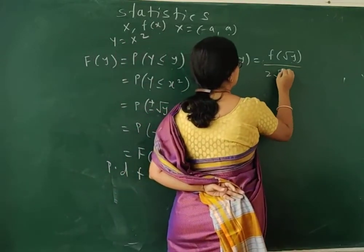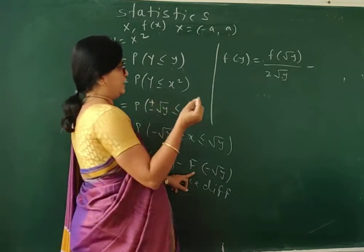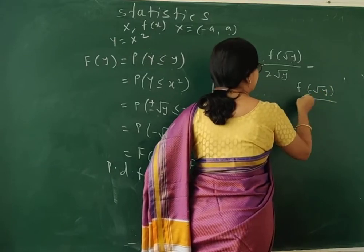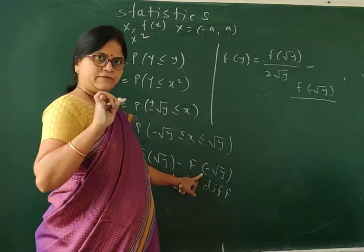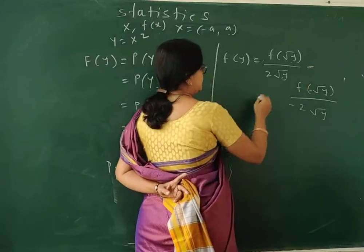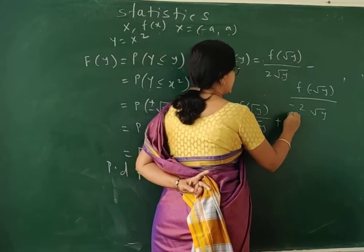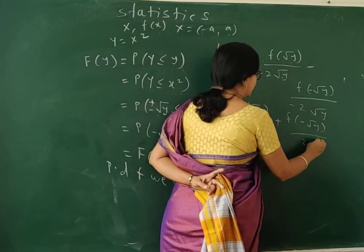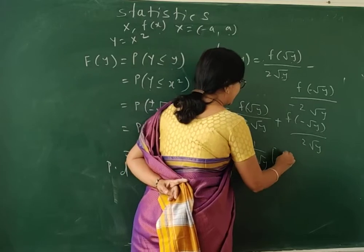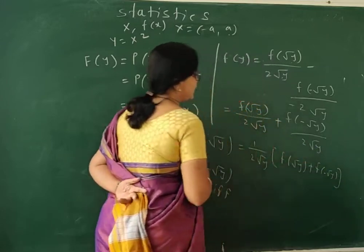So we get f(√y) · (1/2√y) minus the derivative of F(−√y). Since the derivative of −√y is −1/(2√y), the minus signs give a plus. So the final result is: f_Y(y) = [f(√y) + f(−√y)] / (2√y), which is the PDF of Y when Y = X².